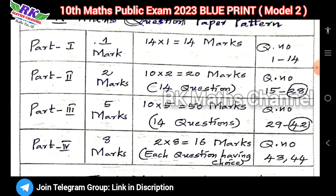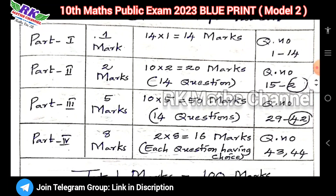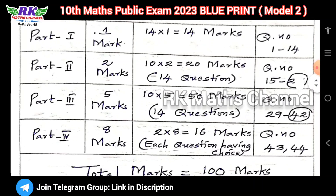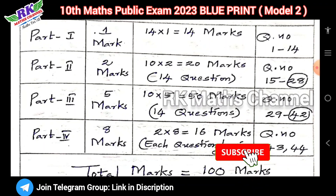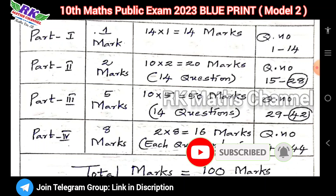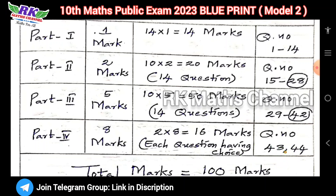The question paper pattern: Part 1 is 1-mark questions — 14 bits, question numbers 1 to 14. Part 2 is 2-mark questions — 14 questions, answer 10. Question number 15 is a compulsory question, and question number 28 is also compulsory. Part 3 has 14 questions of 5 marks each, answer 10. Question number 29 and question number 42 are compulsory questions.